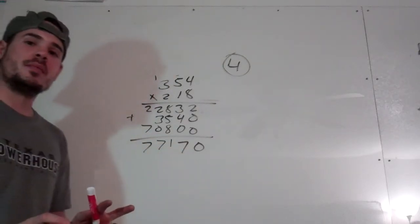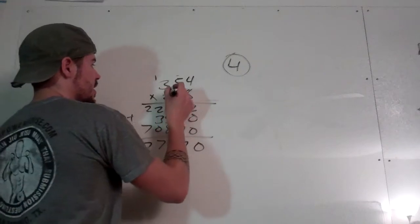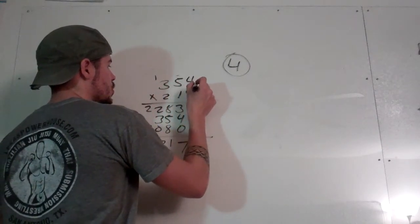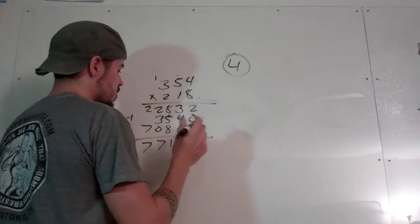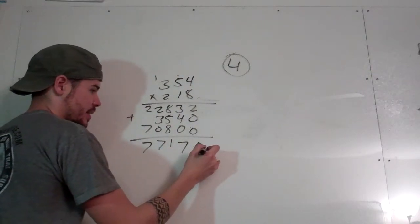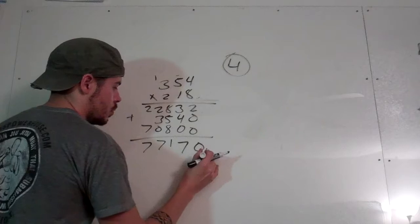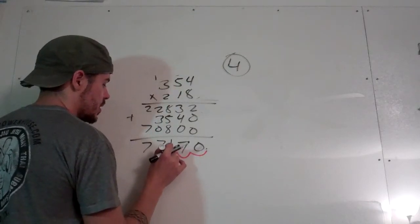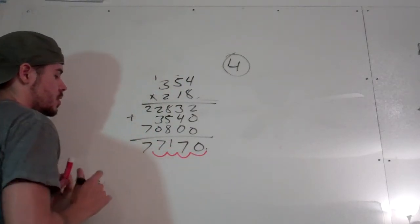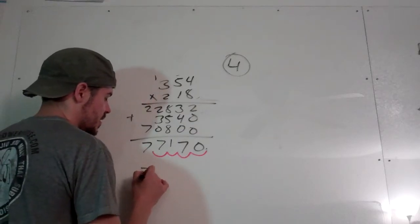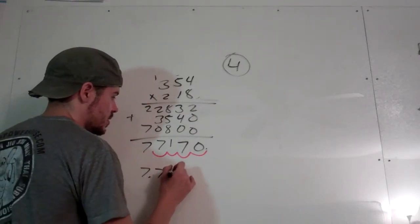Now we're almost done because we moved over the decimal place 1, 2, 3, 4 times. So now the decimal place is actually right here, so let's move it back over 1, 2, 3, 4 times. So my final answer is 7.7170.